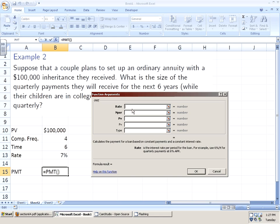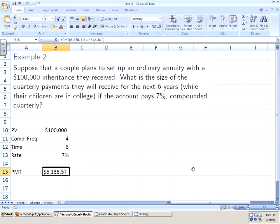Well, the rate is seven percent a year divided by four times. The number of periods is four times per year for six years and the present value is that negative $100,000. So they receive as a regular payment $5,138.57.